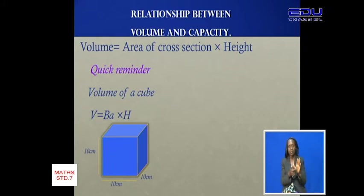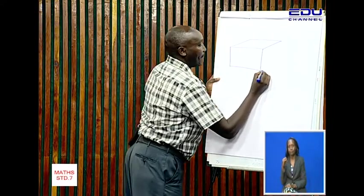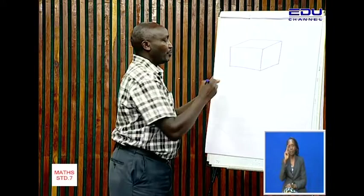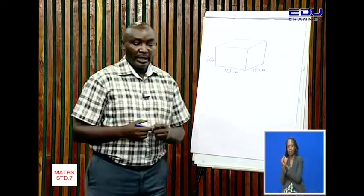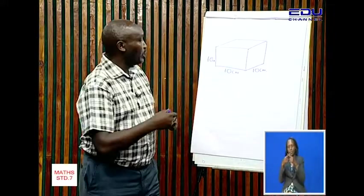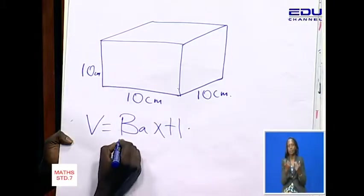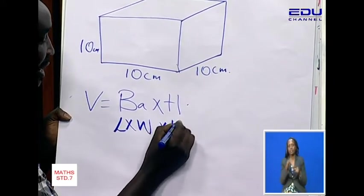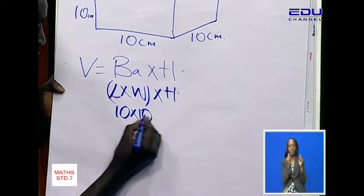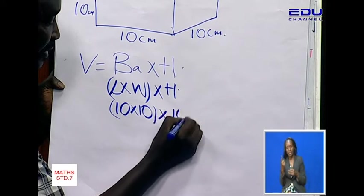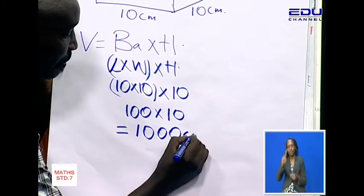In our example here we have a cube — a cube which is 10 centimeters by 10 centimeters by 10 centimeters. To find the volume, volume is equal to base area multiplied by the height. The base area is length times width, so 10 times 10 gives us 100, multiplied by the height of 10, giving us 1000 cubic centimeters.